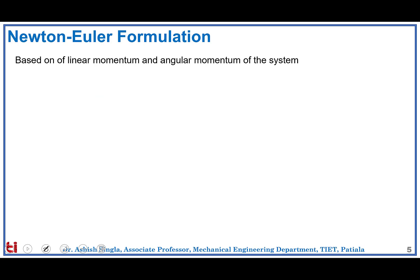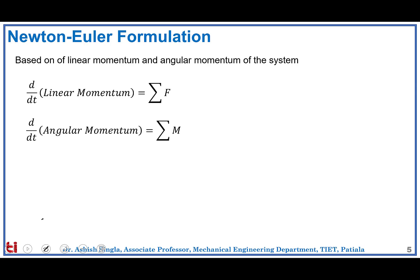This approach is based on the linear as well as angular momentum of the system. The rate of change of linear momentum is equal to the summation of all the forces acting on the system, and the rate of change of angular momentum is equal to the summation of all the moments acting on the system. The first equation was proposed by Newton and the second by Euler, which is why collectively it is called the Newton-Euler formulation.